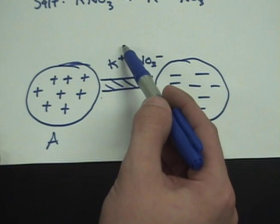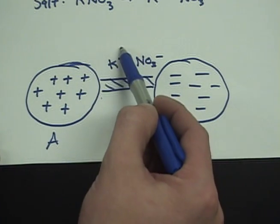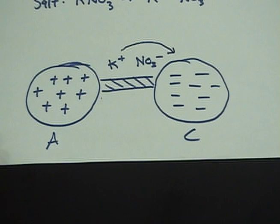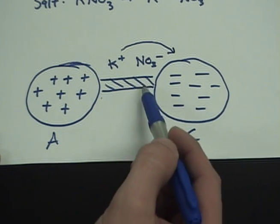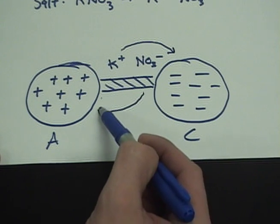If you were the positive ion, you would want to go to where it's more negative. And if you were the negative ion, you would want to go to where it's more positive.